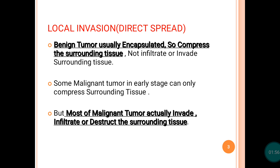Invasion and metastasis are the two most important features of malignancy. We will learn how such spread occurs. I will describe the molecular basis in a separate lecture. But today we will discuss how metastasis — the spread — occurs. First we will start with local invasion and destruction, which is called direct spread to the adjacent tissue.